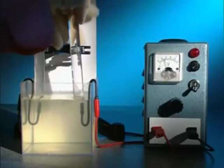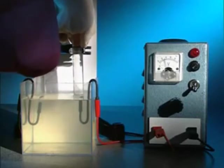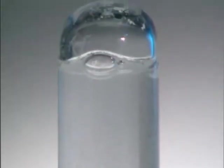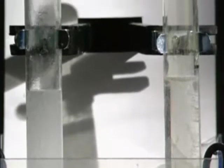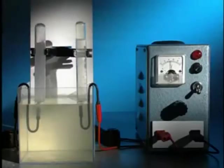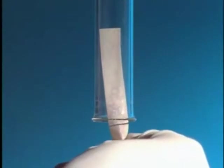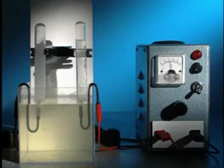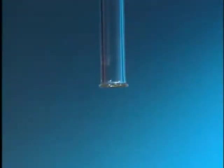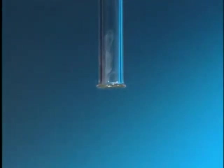To collect the gases, a test tube full of sodium chloride solution is placed over each electrode. Gas displaces the solution and collects in the top of the tube. So, what are the gases? Both are either very pale or colourless, but they can be identified by simple tests. The gas collecting at the positive electrode is tested with damp blue litmus paper. It goes red and quickly bleaches white. The gas is chlorine. The gas collecting at the negative is tested with a lit splint. It pops, a sure sign that this gas is hydrogen.